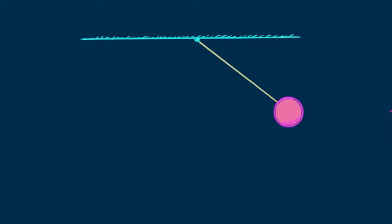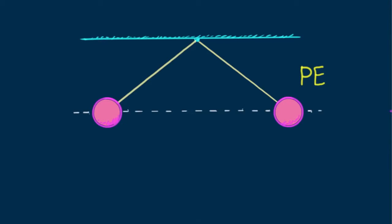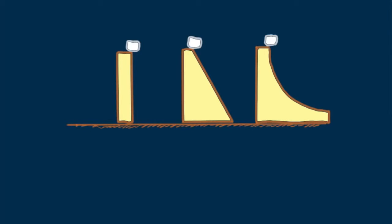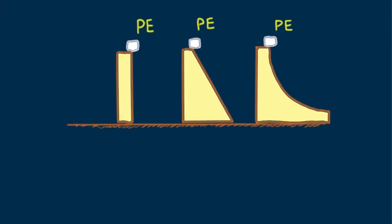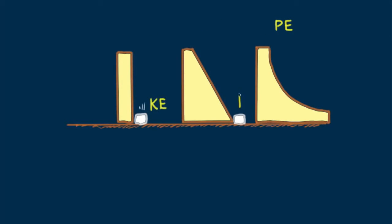Then the pendulum continues to the opposite side. It won't swing higher than its initial height — if it did, the pendulum would have more energy than initially, which in physics is a big no-no. Consider identical blocks atop three ramps of the same height. All blocks have the same potential energy relative to ground level. The potential energy at the top becomes kinetic energy at ground level without encountering friction.